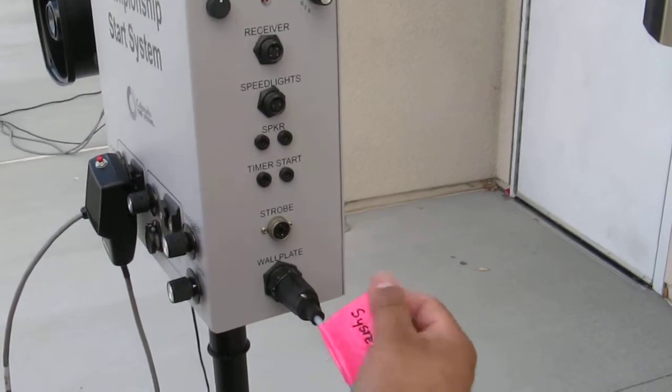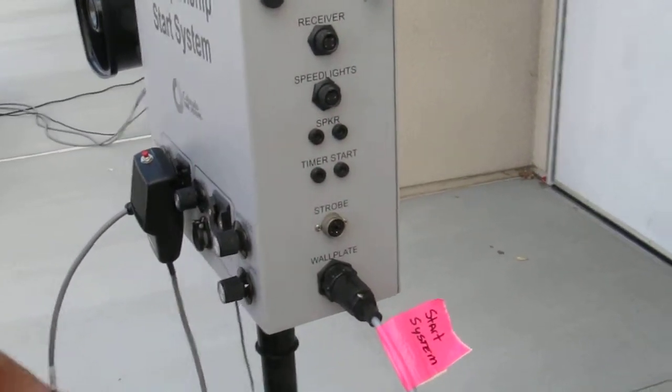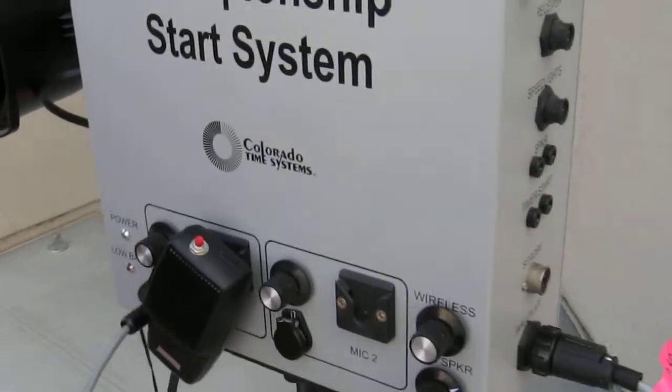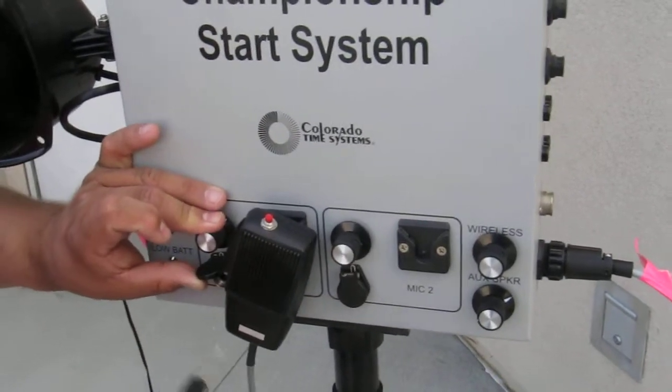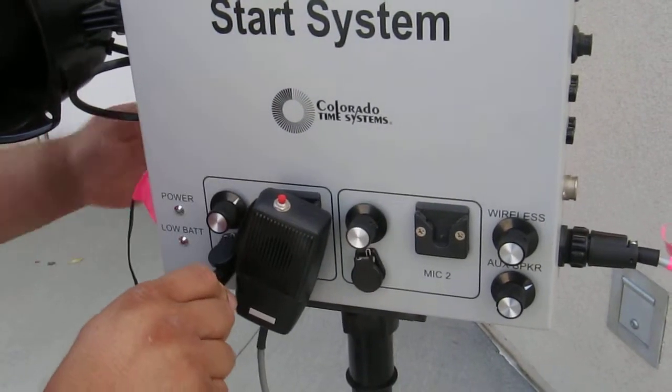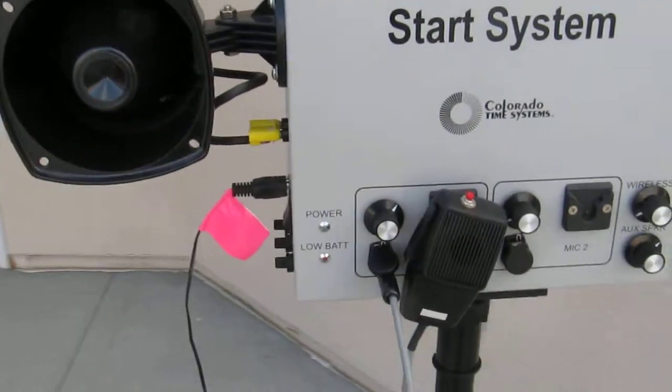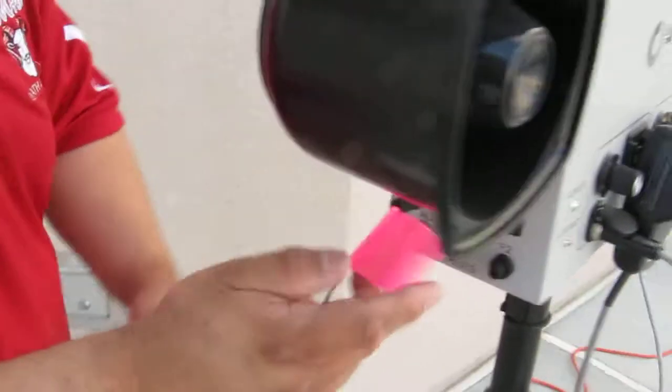It's labeled Start System. On the start system, you also have a microphone, which is a CB mic and a quarter-inch phono jack. You also have an external power, which is currently not labeled.